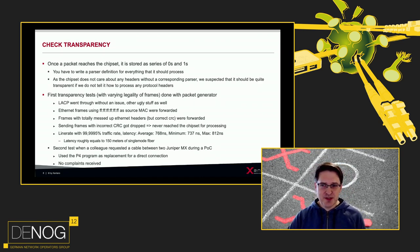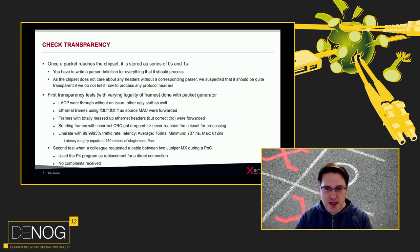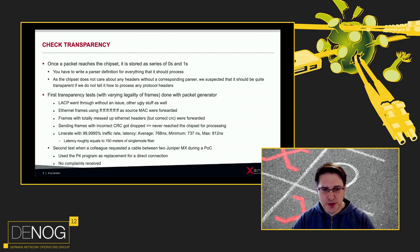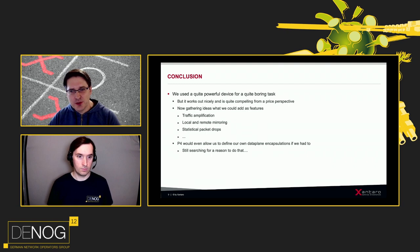The cool thing is that once a packet reaches the Tofino chipset it is just a sequence of zeros and ones, and since we didn't tell it anything about how the packet should look, frames were just sent out and received on the other end. We tested LACP and other tricky protocols. We also tested not-really-sensible things like using the broadcast address as the source MAC address in Ethernet frames with completely messed-up headers — and that also worked fine. As long as you keep the frame check sequence (CRC) correct, everything works as expected. It adds the equivalent of about 150 meters of delay on single-mode fiber. Colleagues who asked for a direct connection were hooked up to the Tofino switch without any complaints.